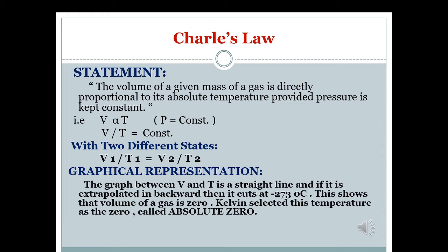Now we discuss Charles's Law. The statement is: the volume of a given mass of gas is directly proportional to its absolute temperature, provided the pressure is kept constant. So volume V is directly proportional to temperature T (absolute temperature), while the pressure is constant.